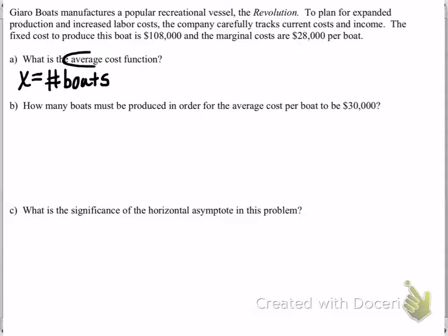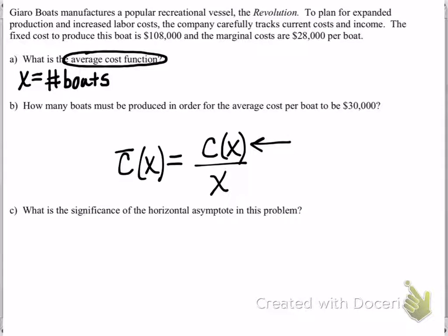Now we're asked to write the average cost function. Remember that the average cost function is found by finding the total cost function and then dividing it by the number of items that you're producing. So basically we know we're going to have an average cost function that'll be some function all divided by the number of boats that we're making.